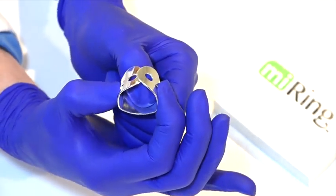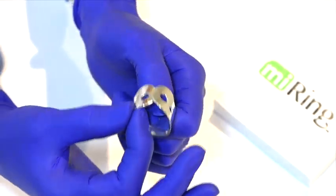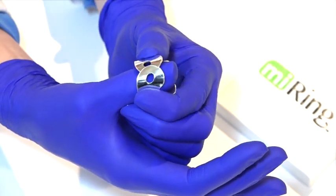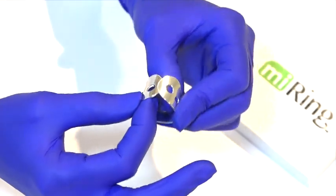You can adjust myring to different thumb sizes by pushing slightly in on the sides or pulling them apart for a bigger thumb.